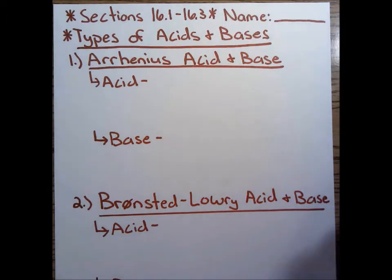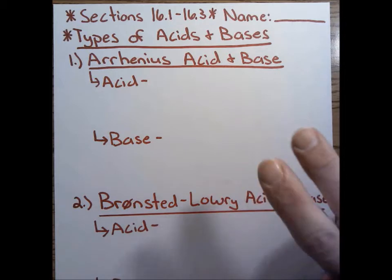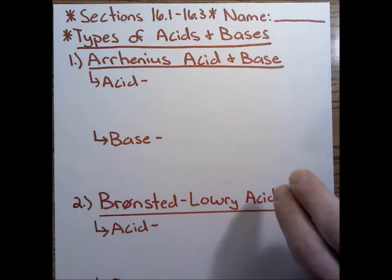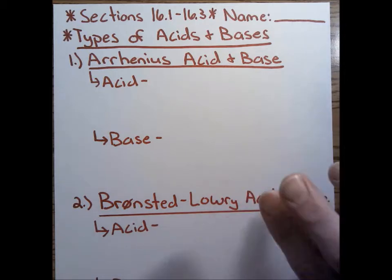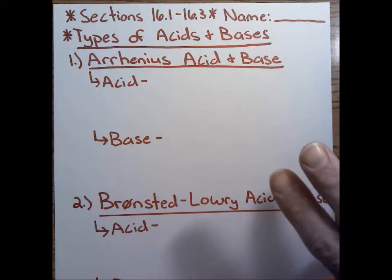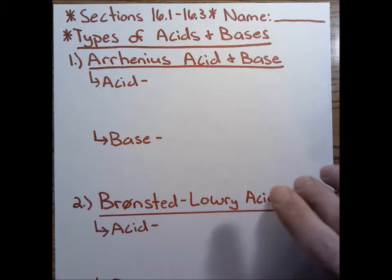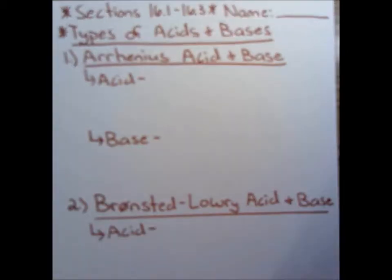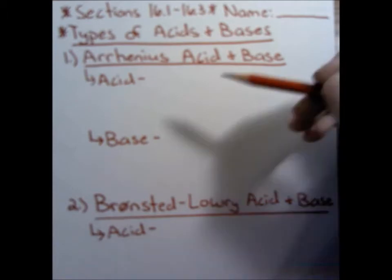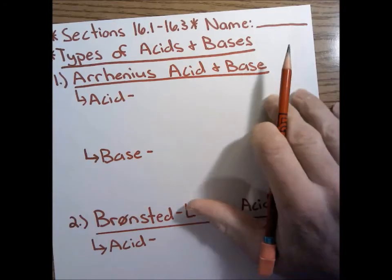Objective number two: define the term Bronsted-Lowry acid and base and conjugate acid and base. Objective number three: identify the conjugate base associated with a given Bronsted-Lowry acid and the conjugate acid associated with a given Bronsted-Lowry base. And objective four: describe the auto-ionization of water and write the ion product constant expression for the equilibrium. Let's get underway with what is an acid and what is a base.